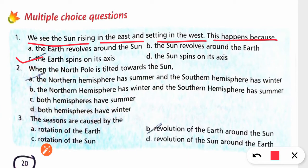When the north pole is tilted towards the sun, the northern hemisphere has summer and southern hemisphere has winter. Absolutely right. The seasons are caused by revolution of the earth around the sun.